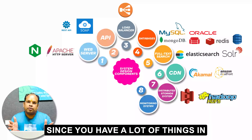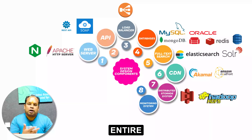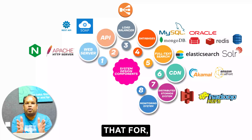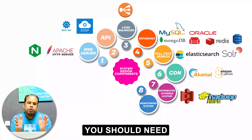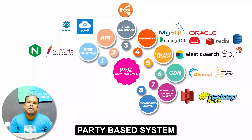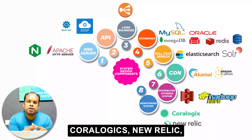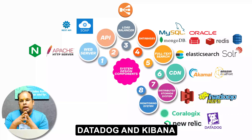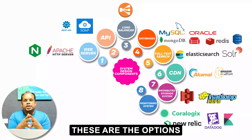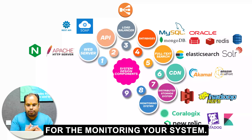The next component is monitoring your system. Since you have a lot of things at the back end, you may want to monitor all your APIs, back-end and front-end, and all that stuff. For that particular task, you need a monitoring system. There are a lot of third-party systems already available — for example, Coralogix, New Relic, Datadog, and Kibana.